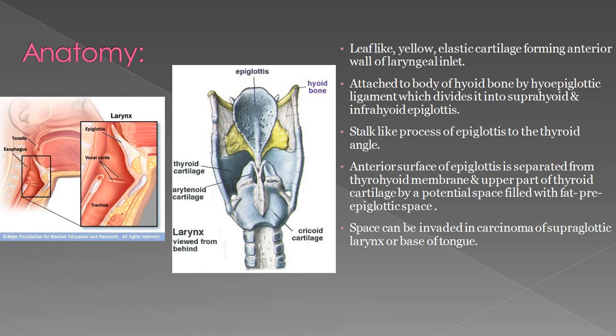The anterior surface of the epiglottis is separated from the thyrohyoid membrane and upper part of the thyroid cartilage by a potential space filled with fat — the pre-epiglottic space. Here you can see the thyrohyoid membrane, the thyroid cartilage, and the hyoid bone.